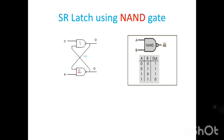In a NAND gate, when one of the inputs is 0, the output is high. When both inputs are 1, the output is 0. In other words, the NAND gate output is always the complement of A·B — the complement of AND is NAND.